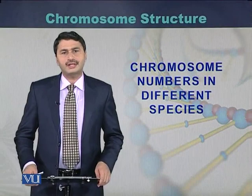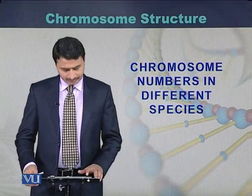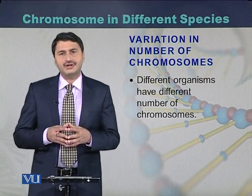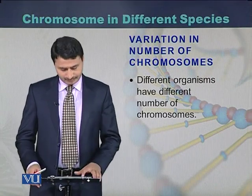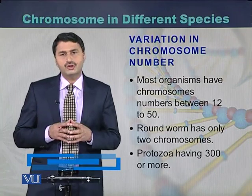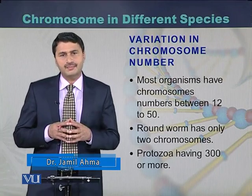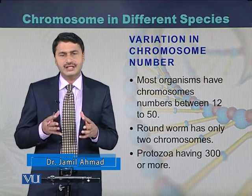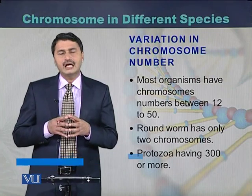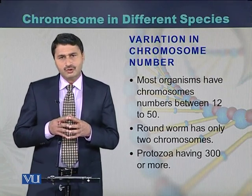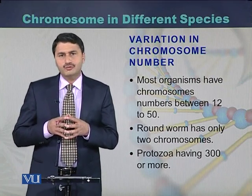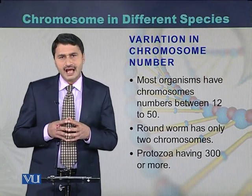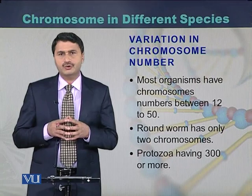Different organisms have different numbers of chromosomes. Most organisms have a chromosome number between 12 to 50, but it can vary species to species. For example, roundworms have just two chromosomes, while in the case of protozoans they have more than 300 chromosomes.